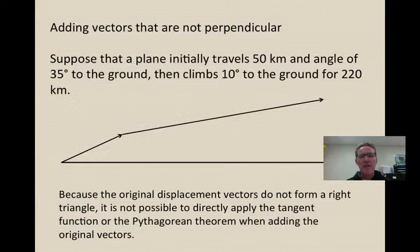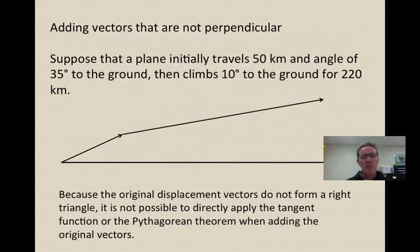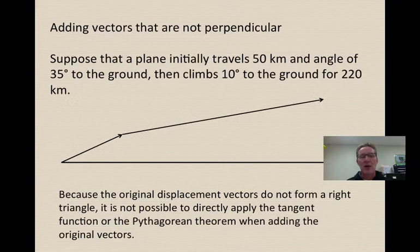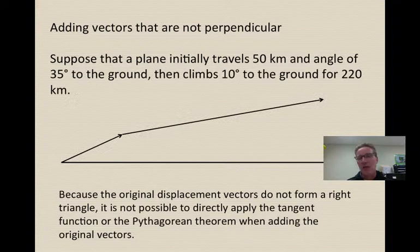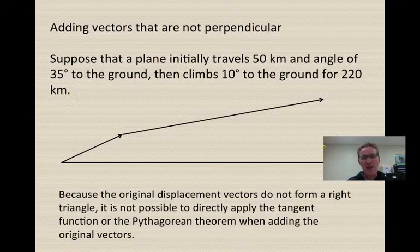Up to this point, we've done vector addition involving vectors that are perpendicular to each other. What if, however, we have vectors that are not perpendicular to each other? So this would be an example of non-perpendicular vectors. We have a displacement vector of 50 kilometers, 35 degrees to the ground, and then we have another vector that's 10 degrees to the ground with a displacement of 220 kilometers. Since these are not perpendicular, we can't directly use the vector addition system that we've done so far. We can't just simply use Pythagorean theorem and the tangent function to do that. So we have to use a different approach.